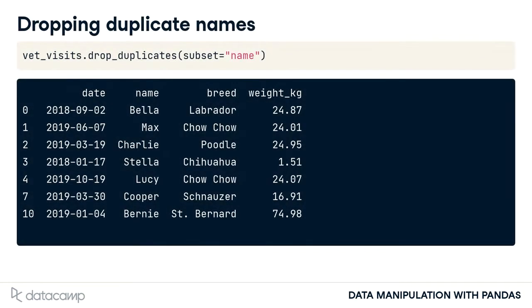Let's fix this by removing rows that contain a dog name already listed earlier in the dataset — in other words, we'll extract each dog by name from the dataset once. We can do this using the drop_duplicates method. It takes an argument, subset, which is the column we want to find our duplicates based on. In this case, we want all the unique names. Now we have a list of dogs where each one appears once.